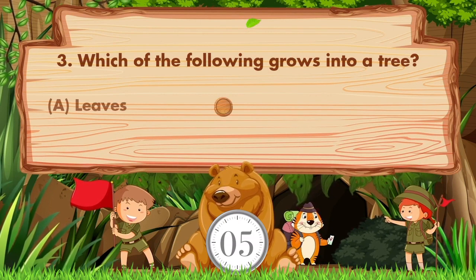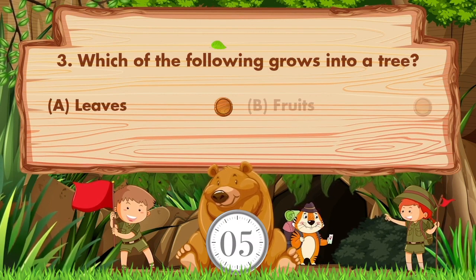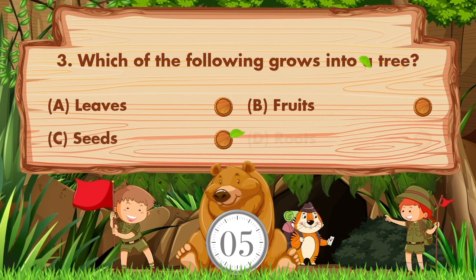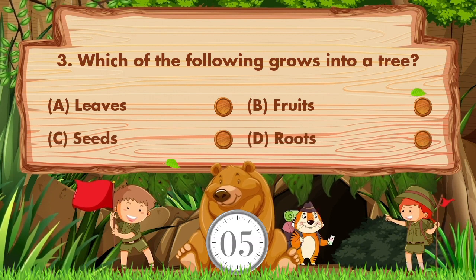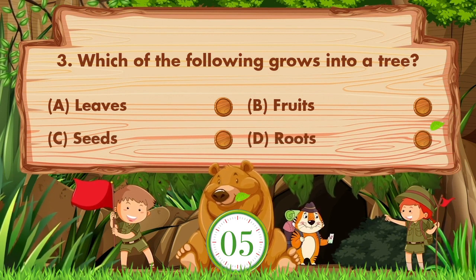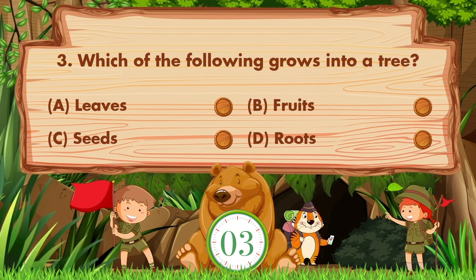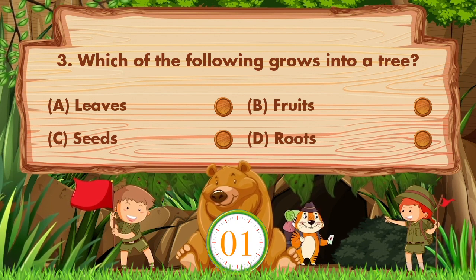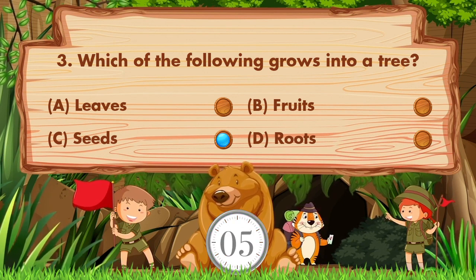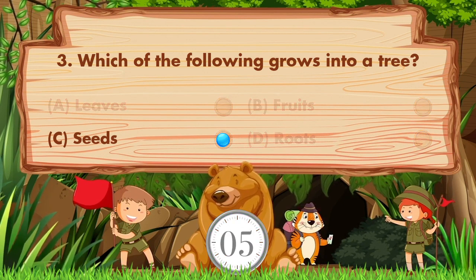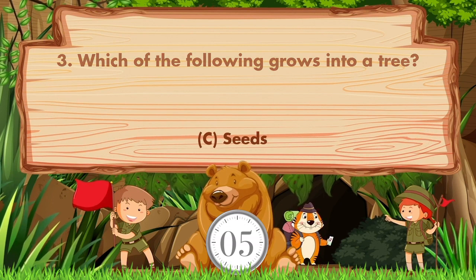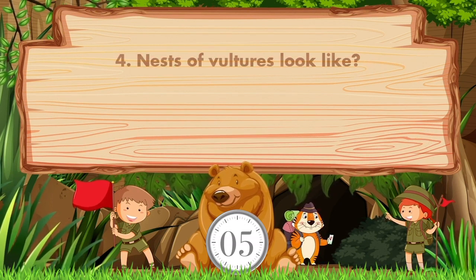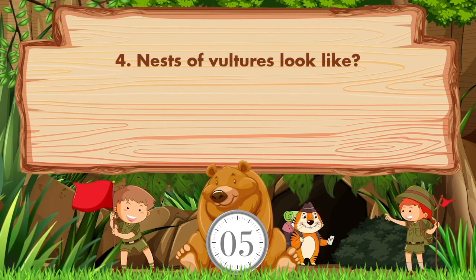Which of the following grows into a tree? Option A is leaves, B fruits, C seeds, D roots. Answer is option C, seeds.